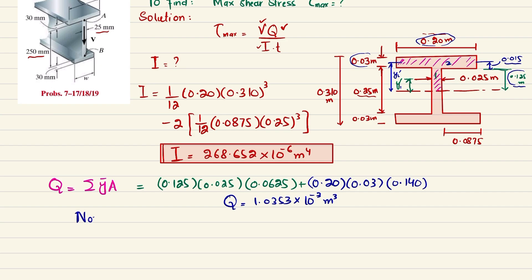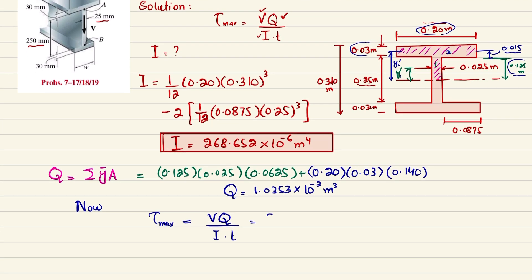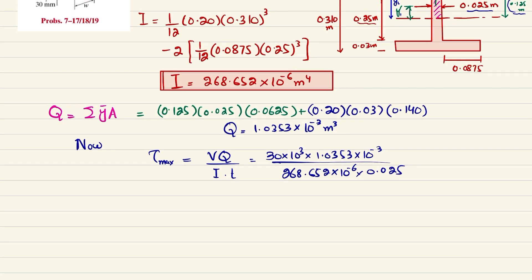Now substituting into τ_max = VQ / (It): V = 30 × 10³ N, Q = 1.0353 × 10⁻³ m³, I = 268.652 × 10⁻⁶ m⁴, and t = 0.025 m (web thickness). Solving gives the maximum shear stress = 4.62 MPa.